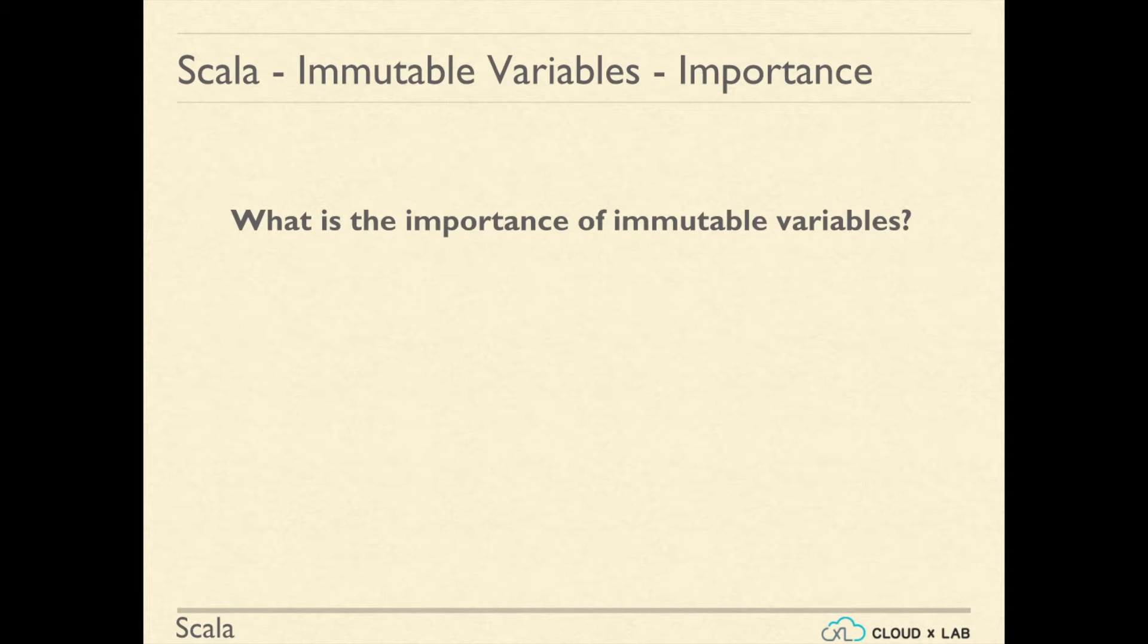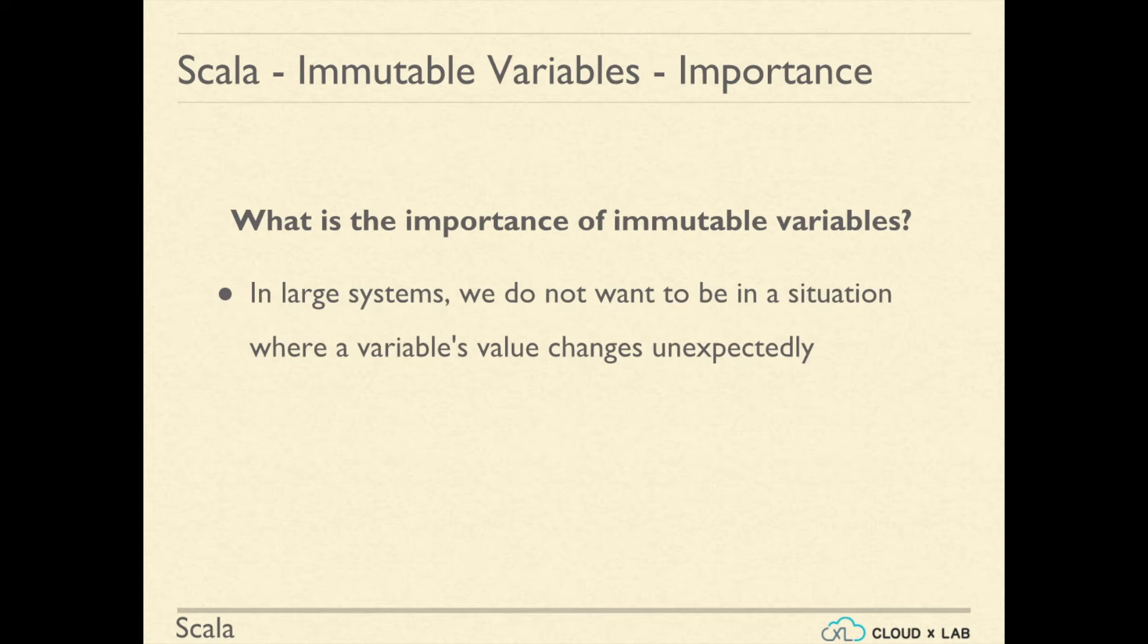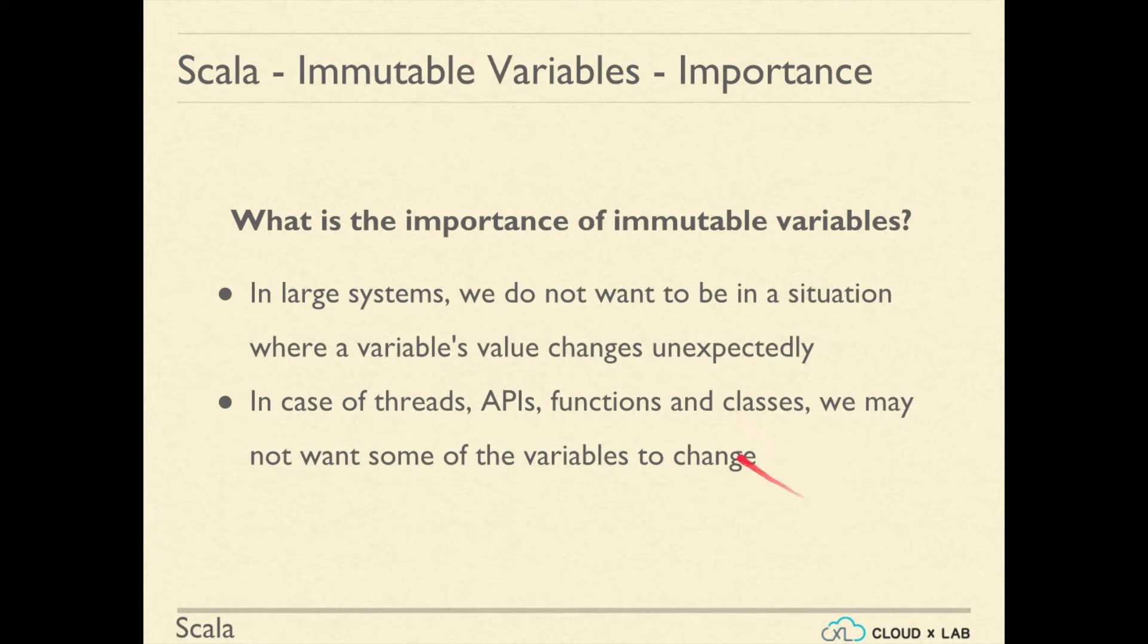Let's understand why we need immutable variables. In large systems, we do not want a variable's value to change unexpectedly as this may lead to unpredictable results. In the cases of threads, APIs, functions and classes, we may not want some variables to change. In these scenarios, we define the variables as immutable.